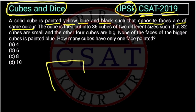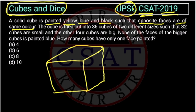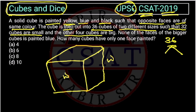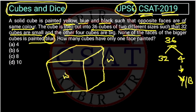So there is a cube. The opposite faces are of same colour — if this face is white, the back face will also be white. The cube is then cut into 36 cubes of two different sizes, such that 32 cubes are small and the other 4 are big. None of the faces of the bigger cubes is painted blue, so these four are yellow or black only.